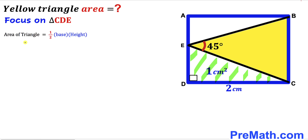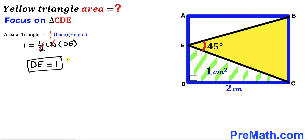Let's fill in the values. The area of this triangle is 1, which equals one half times base 2 times height DE. We can see that 2 and one-half cancel each other out. So therefore our segment DE length turns out to be equal to 1 centimeter.